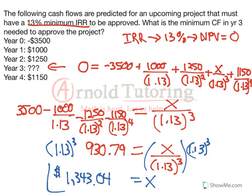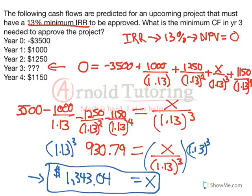That has to be the actual cash flow in year 3, so that it'll get discounted back to 930.79, and that'll all work into an IRR of exactly 13% because that would make our NPV 0 at 13%. This means year 3's cash flow has to be at least this amount — if it's more, that will only increase the internal rate of return. We want the IRR to be 13% or higher because this is an investing project, with a negative cash flow at time 0. So 13% is basically the hurdle rate that the investor set.